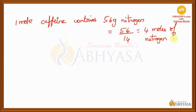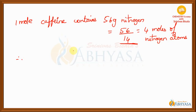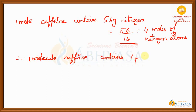I will tell you why I did not use 28 here. Suppose if I use 28 here, I will be getting the number of moles of nitrogen molecules. But in caffeine, nitrogen is not in the molecular form — we need to calculate the number of atoms of nitrogen. That is the reason why, in order to get the number of moles of nitrogen atoms, given mass is divided by gram atomic mass, not with the gram molecular mass. If you use 28 here, your answer is wrong. As one mole of caffeine contains 4 moles of nitrogen atoms, we can say that one molecule of caffeine contains 4 nitrogen atoms.